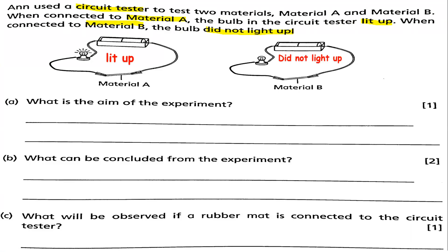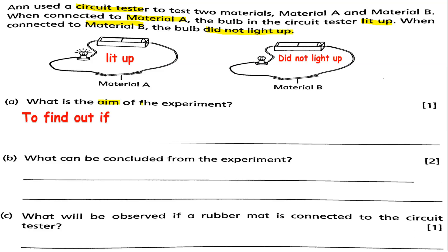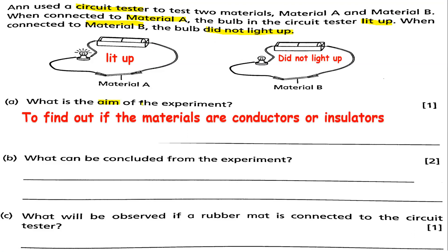Question: What is the aim of the experiment? The aim means what we need to find out — what is the goal. The aim of the experiment is to find out if the materials are conductors or insulators of electricity. That is why we try material A and material B with the tester to see if the bulb lights up or does not light up.